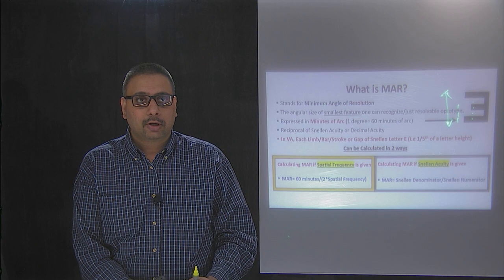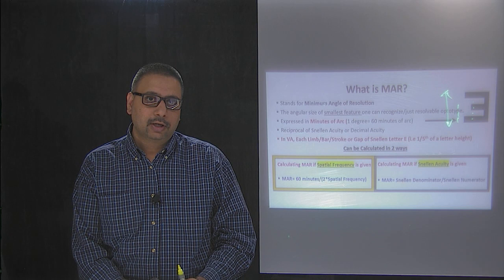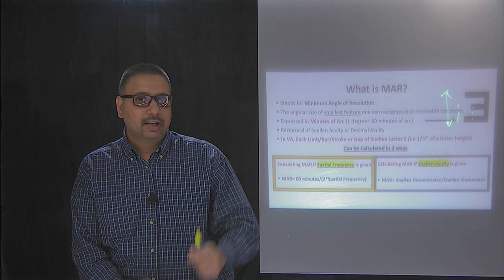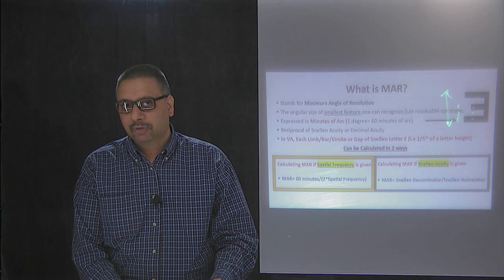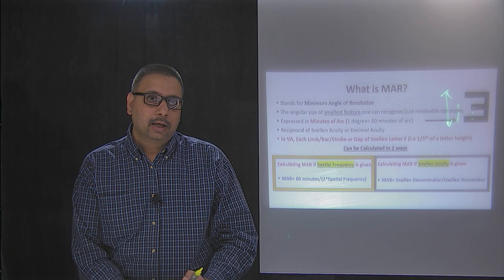MAR can be calculated in two different ways. The formula on the left is for calculating MAR when you have spatial frequency. The one on the right lets you calculate MAR when you have Snellen acuity.